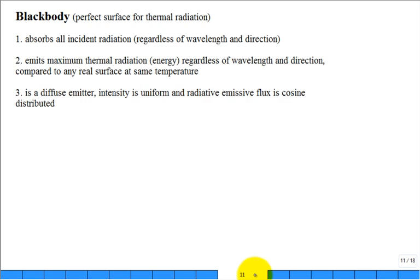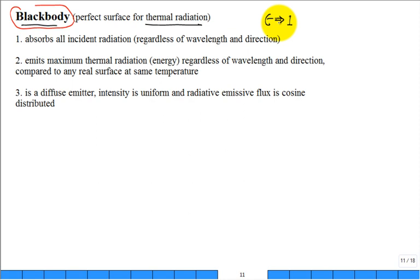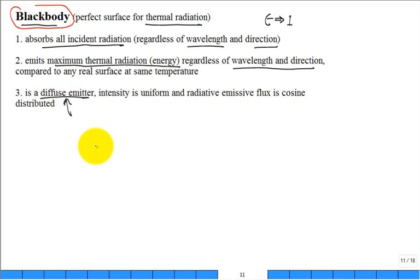A blackbody is a perfect thermal emitter and a perfect absorber. Its emissivity approaches one, so it emits according to the full Stefan-Boltzmann law E = σT⁴. It absorbs all incident radiation regardless of wavelength and direction, emits maximum thermal radiation regardless of wavelength or direction, and is a diffuse emitter — so intensity is uniform and emissive flux is cosine-distributed.